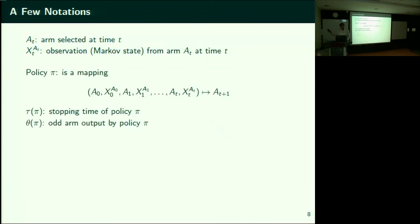Having looked at all movies from time zero until time T, you either stop and declare which is the odd movie or you select which movie to observe next. A policy is a mapping that tells you which movie to look at next, or that you're done. Let's say policy π stops at some random time τ(π), at which time it declares θ(π) — the odd movie — based on all information acquired.